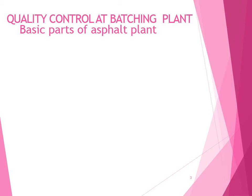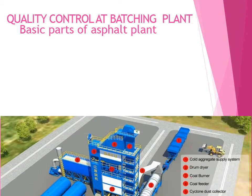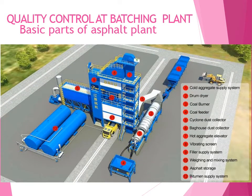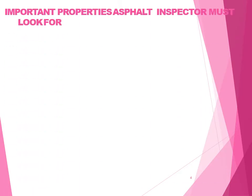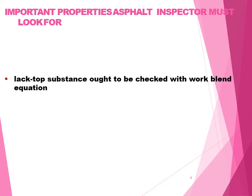Quality control at the batching plant. Batching plants — how they work, the basic parts — are explained in the accompanying diagram. Important properties that asphalt inspectors must look for are as follows.